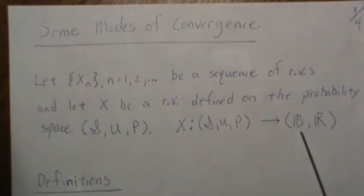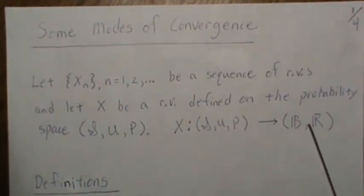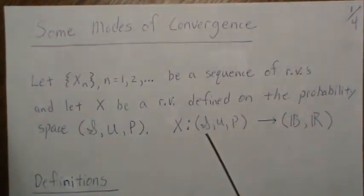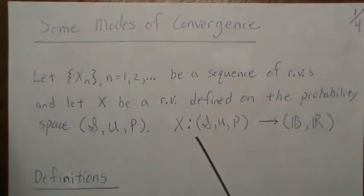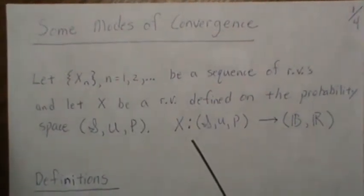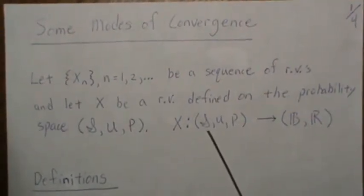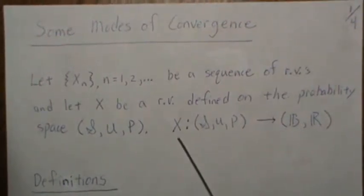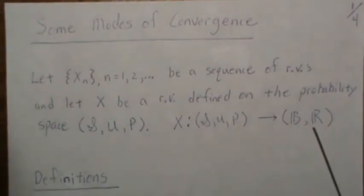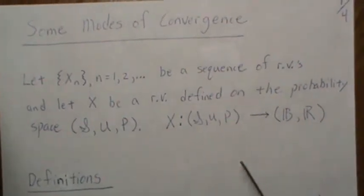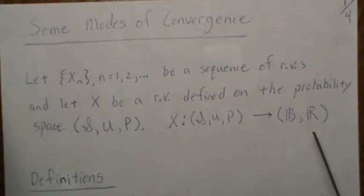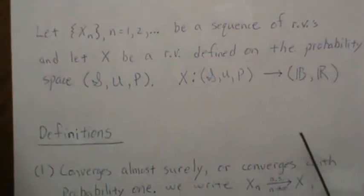There's a Borel sigma field associated with it. For example, roll a die — the observed outcome is not numeric, so we use a random variable to map it to a number, say one. That's just one example, but X takes the sample space and maps it to the real numbers. Now let's start looking at some definitions.